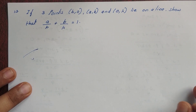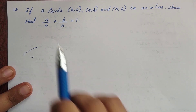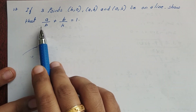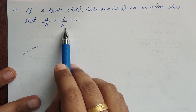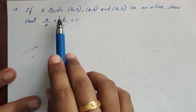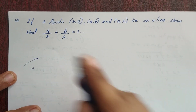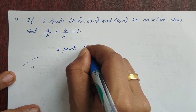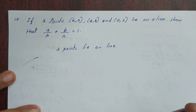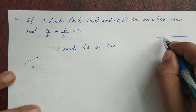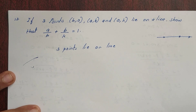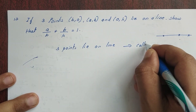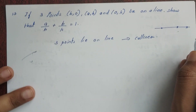Problem 13: If three points h, 0 and a, b and 0, k lie on a line, show that a by h plus b by k equals 1. Since 3 points lie on a line, they are collinear. For collinear points, slope of AB equals slope of BC.